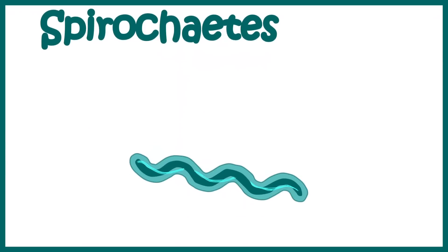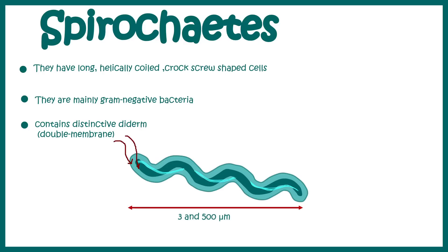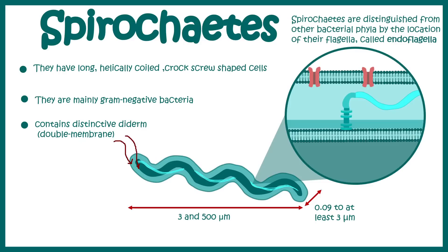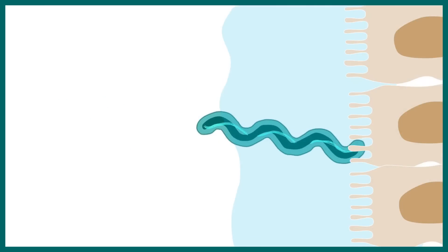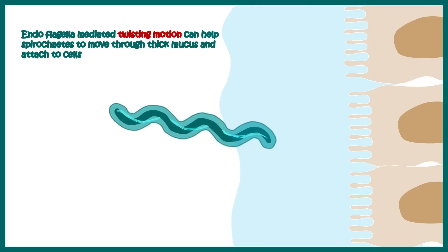Treponema pallidum is a spirochete. Spirochetes are bacteria which have a long, helically coiled, corkscrew-like appearance. They are mainly gram-negative bacteria, they contain a distinct double membrane, and they are about 3 to 500 microns long. They have an endoflagella system — flagella within the bacteria — and this endoflagella helps the bacteria make a corkscrew-like motion, which helps the bacteria wade through thick mucus and invade the cells of the host.